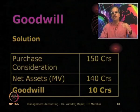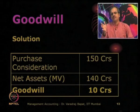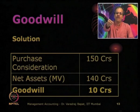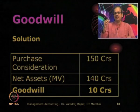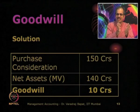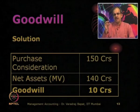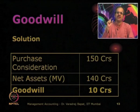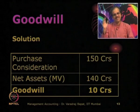The value of net assets at market prices is 140 crores, but A agreed to pay 150 crores — over and above the market price. A pays more because it realizes the business of B is worth more than 140 — there is something hidden and intangible that gives benefit, which is reputation, known as goodwill. So goodwill is valued at 10 crores.